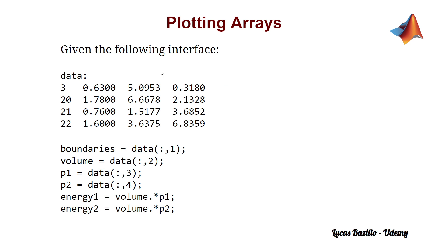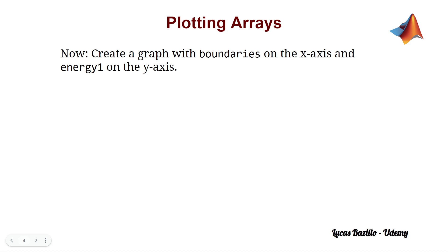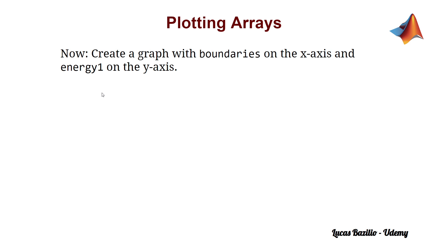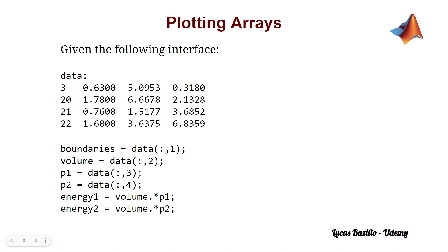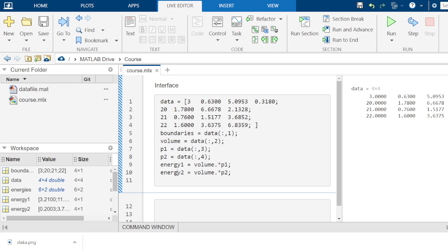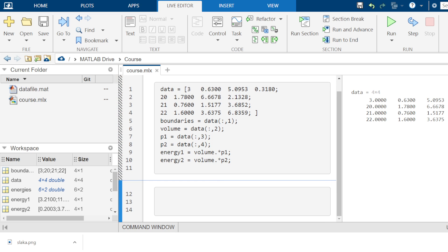For instance, given this interface where we have the data matrix, we have this sequence of arrays and this information. Let's create a graph with boundaries, which is one array, and energy 1, which is another array. Keep in mind that boundaries needs to be on the x-axis and energy 1 on the y-axis.